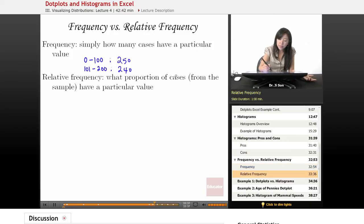Now relative frequency is what proportion of cases from the sample have that particular value. So if you had 250 people having between zero and 100 friends, what is that in relation to your entire sample?